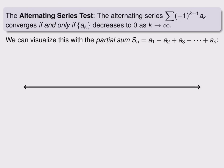In other words, the sequence of positive terms must converge to zero on its own, and it must do so by always decreasing.